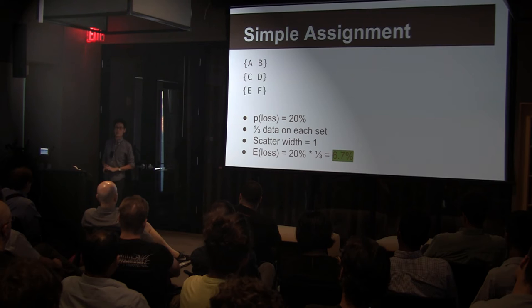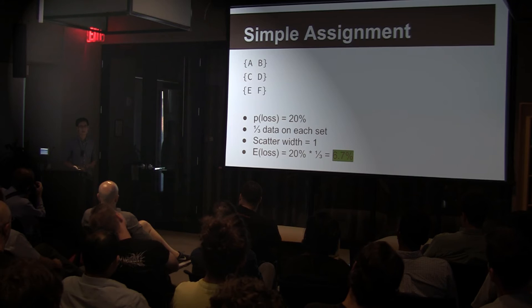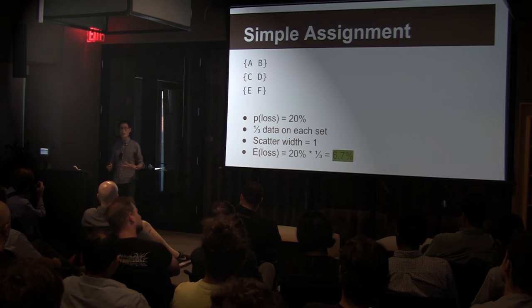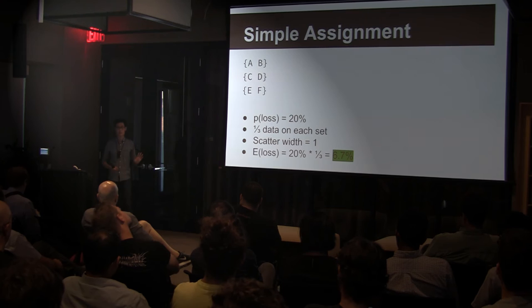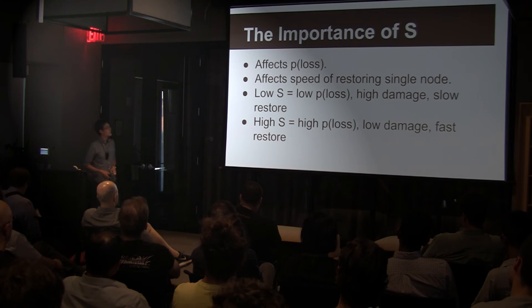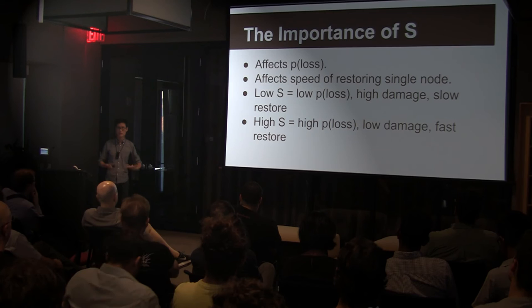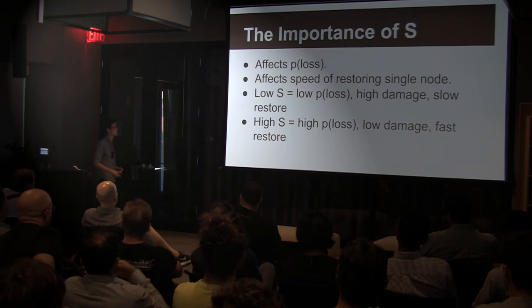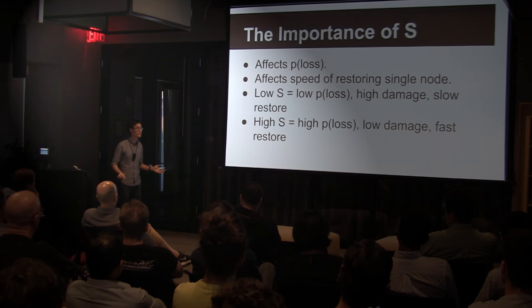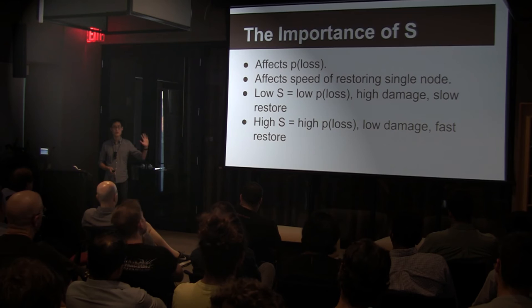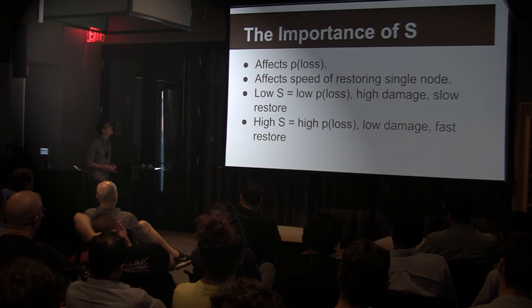The point is that choosing different ways to replicate your data doesn't necessarily give you a better expected loss outcome, but it does give you different probabilities of loss. This is where the framing insight of copy sets comes in — it is possible to control the kind of failure. You will fail at some point, but you can control it. S affects the probability of loss and the speed of restoring a node. A low scatter width means low chance of loss but high amount of data lost and a slow restore. A high scatter width means high chance of loss, low amount of data lost, and fast restore.